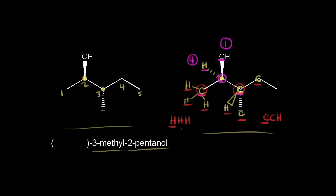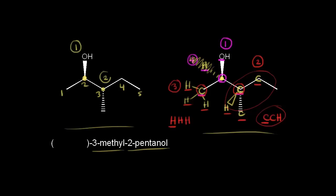We look for the first point of difference: carbon versus hydrogen. Carbon has the higher atomic number, so the group on the right wins — it gets priority number two, and the methyl group gets number three. Now that we've assigned priority, the next step is to orient the molecule so the lowest priority group projects away from us. The hydrogen is already pointing away, so we can ignore it and focus on groups one, two, and three. The OH is highest priority, the group to the right is second, and the methyl group is third. Drawing a circle from one to two to three, we're going clockwise — and clockwise is R. So we are R at carbon two.